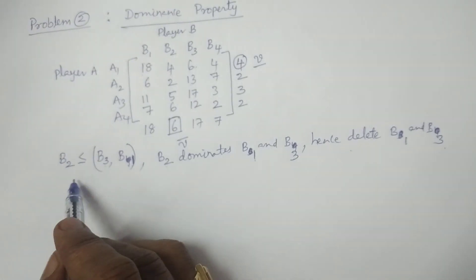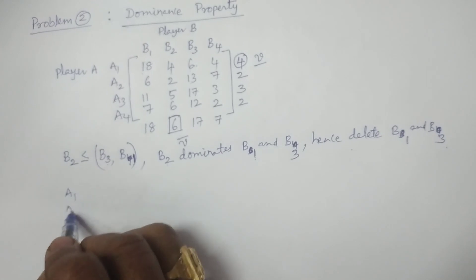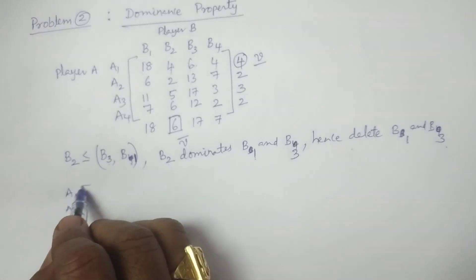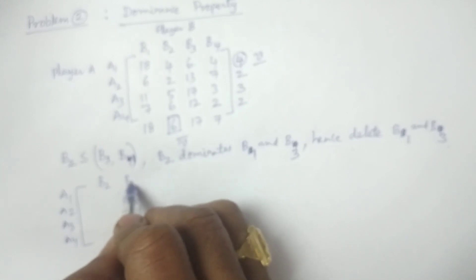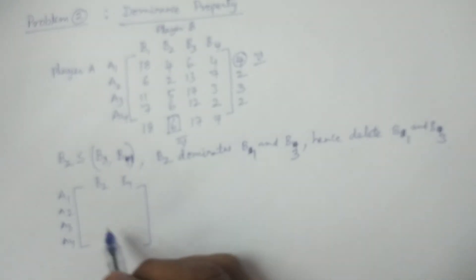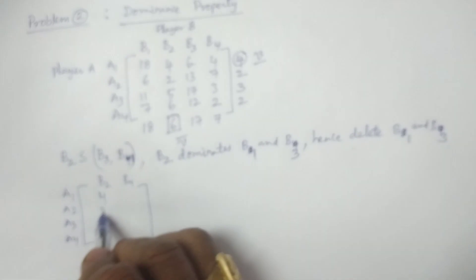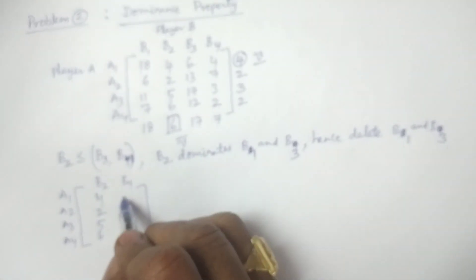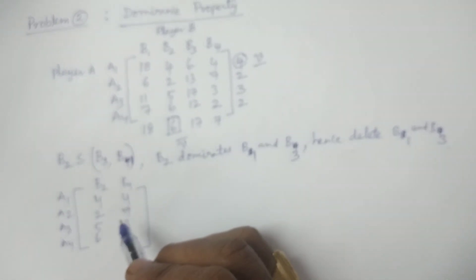The reduced payoff matrix now has Player A with strategies A1, A2, A3, A4, and Player B with only strategies B2 and B4. What is B2? The values are 4, 2, 5, 6. And B4 is 4, 7, 3, 2.